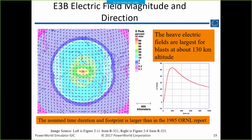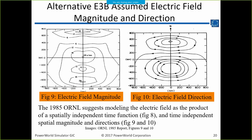E3B is more complicated and more concentrated, caused by the heave where the detonation occurs. The heave electric fields are largest for blasts at a different altitude than E3A. A public waveform from the 1985 Oak Ridge National Lab report shows electric field contours for E3B with areas of 25 volts per kilometer down to 6 volts per kilometer. The footprint is about 1,600 kilometers in the east-west direction and 1,600 kilometers north-south — a very non-uniform field with directional components.